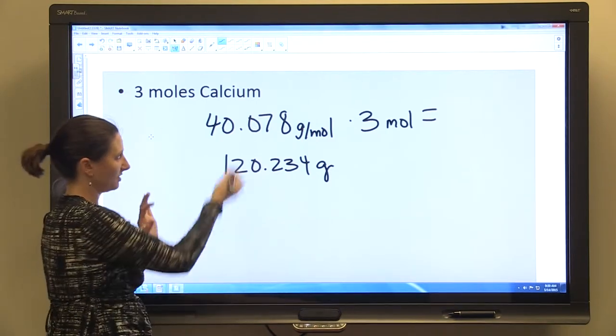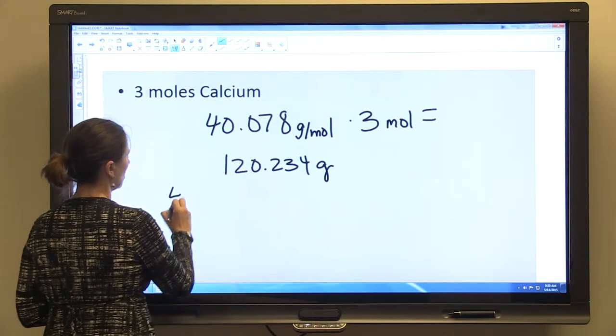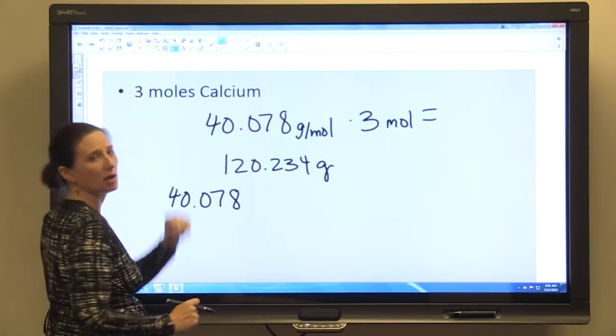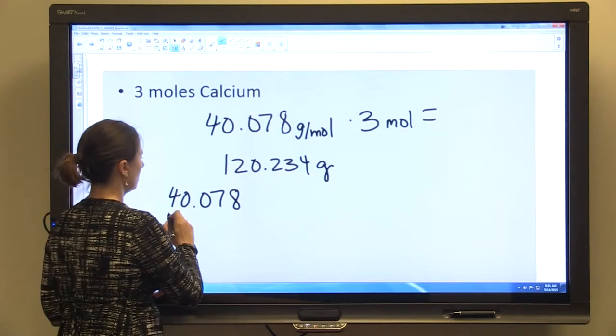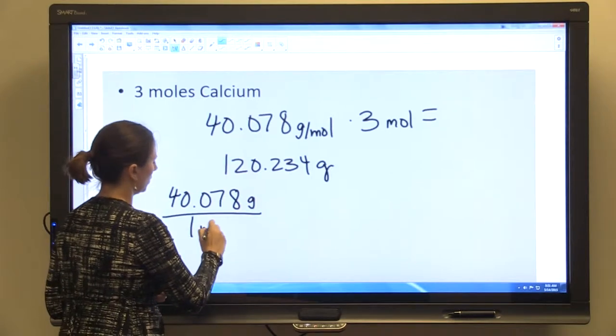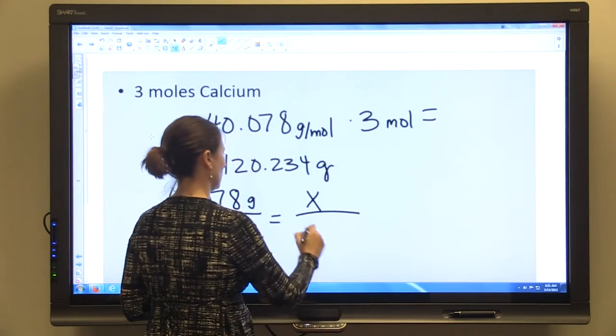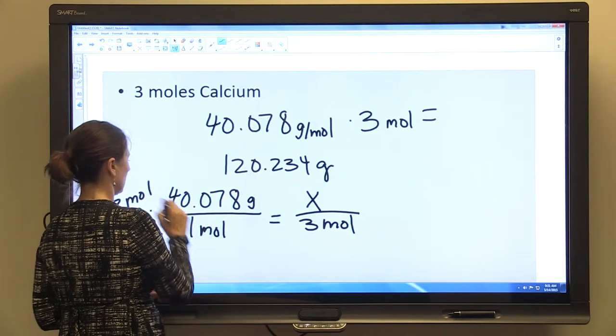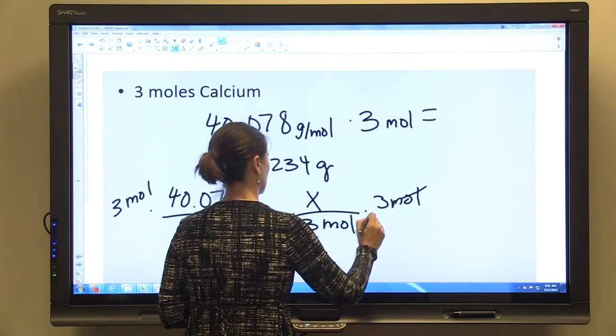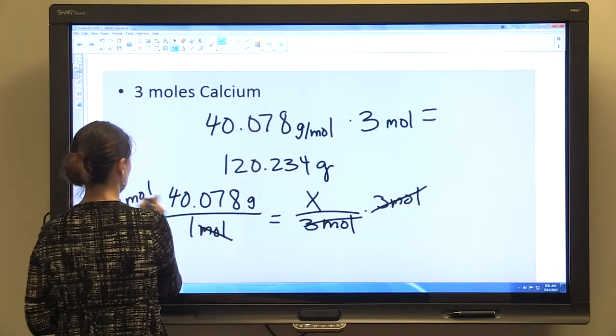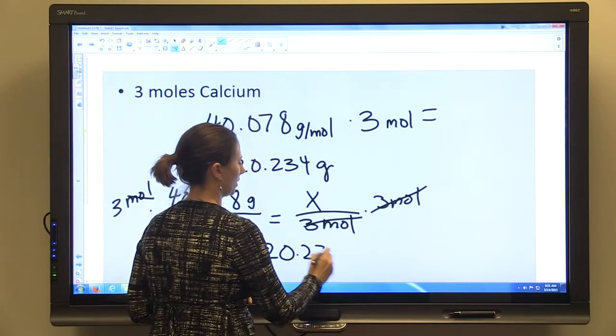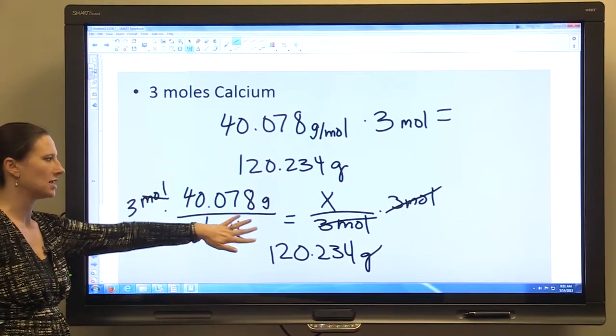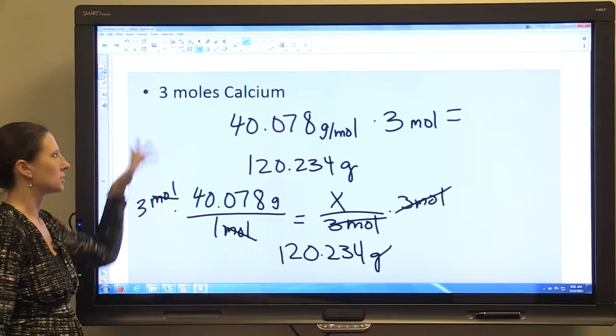Or you might not know automatically to multiply by three, and so you might want to set up a proportion. You can do this either way. And if you always set up a proportion, then no matter how complicated the number of moles we're looking for is, you'll always know how to solve that. So it's grams in one mole equals how many grams in three moles, and then you can multiply both sides by three moles. We'll cancel that. The moles will cancel here, and we'll come up with 120.234 grams.